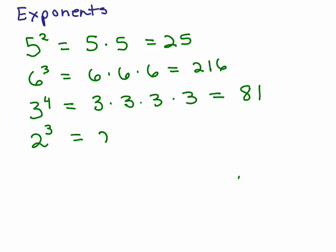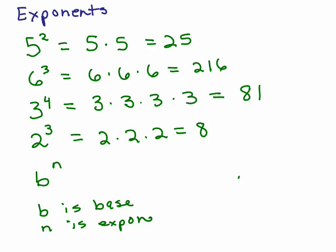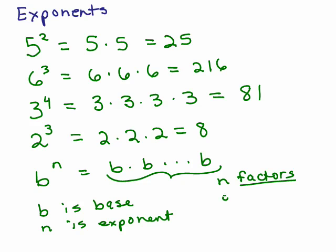And 2 cubed then would be 2 times 2 times 2 or 8. So in general, if you have b to the n, the b is called the base, and n is the exponent. You're multiplying b times itself a bunch of times and you're going to have n factors of b.